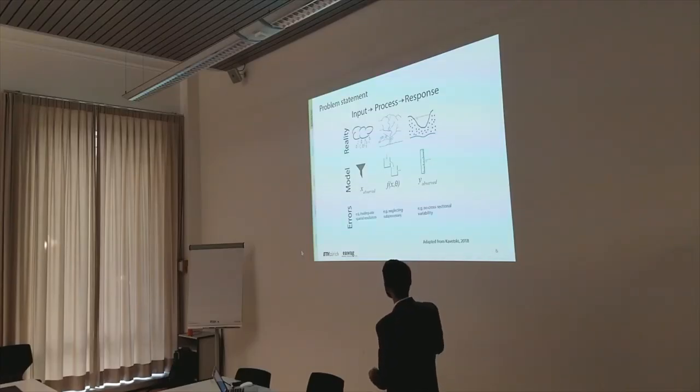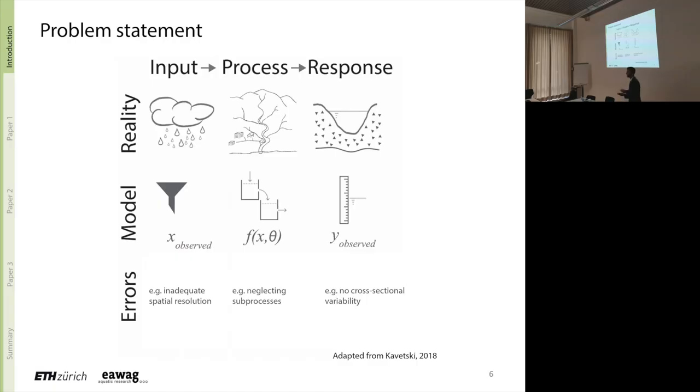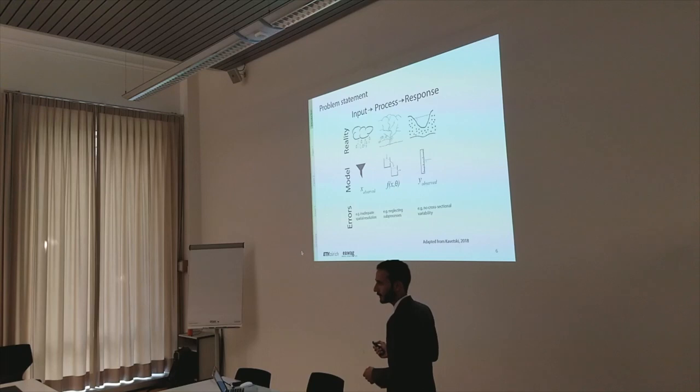Already during this modeling exercise, we make simplifications which entail errors. For example, the inadequate spatial resolution of the precipitation measurements, neglecting several sub-processes, and the output itself would be uncertain. The measurements would not have cross-sectional variability at many times. So by this very nature, we expect that there would be a mismatch between what our model says and how the reality will turn out to be.